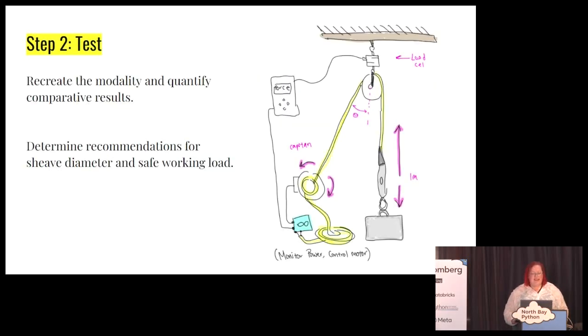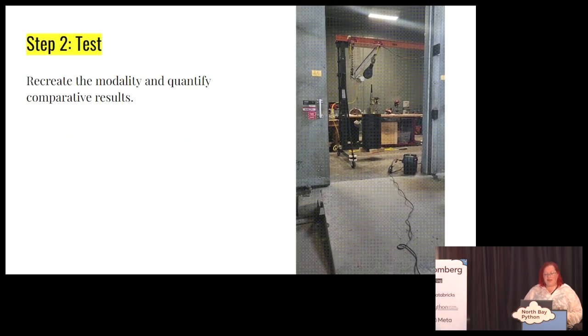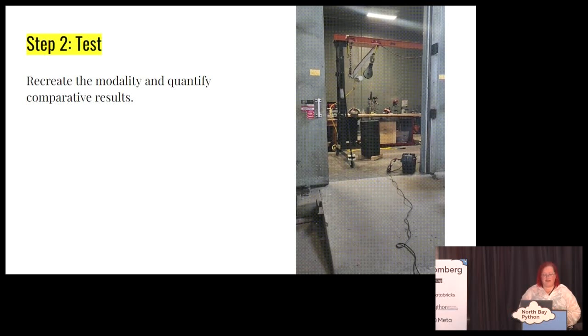So, we decided to rig up a test. In this test here, you can kind of see we've got an anchor, we've got something connecting to a pulley or sheave, and then that goes to a winch, which then gets controlled. In testing, we want to recreate the modality that we were seeing and quantify and compare results. The outcome that we wanted from this was to determine recommendations for the sheave diameter, so how big of a sheave we had to recommend to customers, and also the safe working load. What should you use to do this? How often do we think you can do it? Please never do it, but we know you won't listen to us, so if you have to, try this. So, then we tested it. Recreate the modality, quantify comparative results.